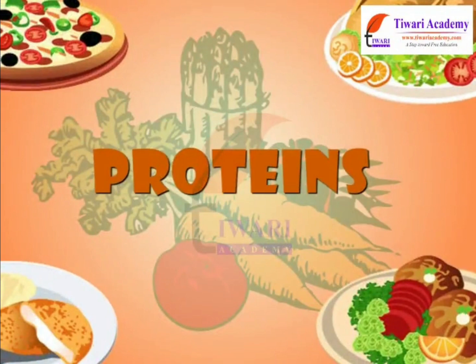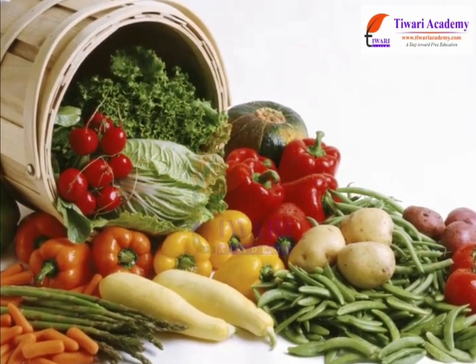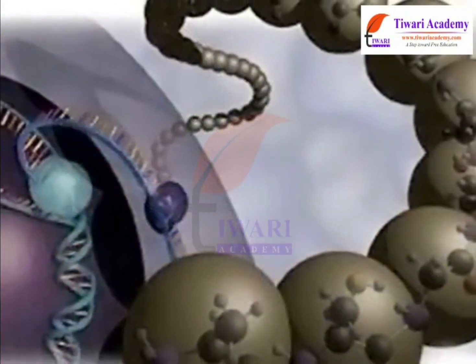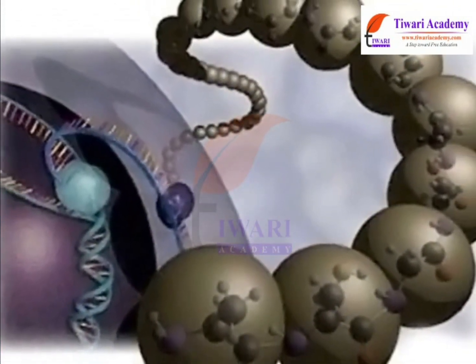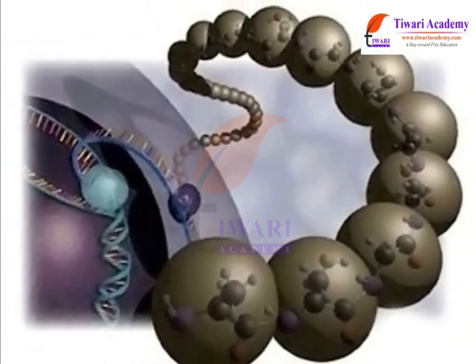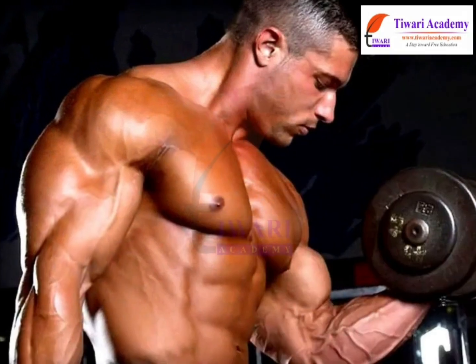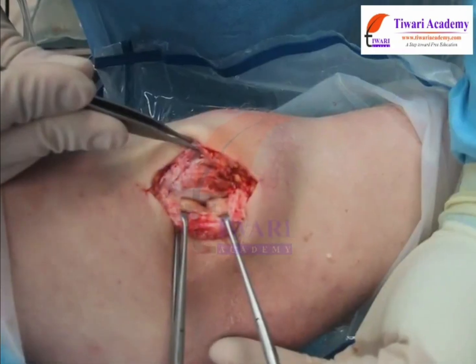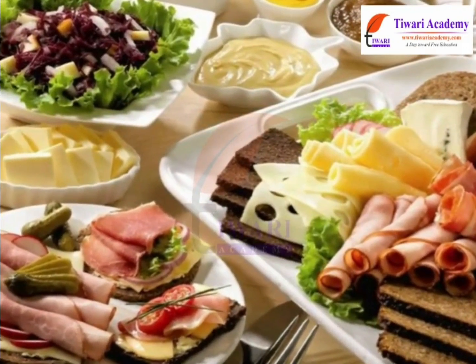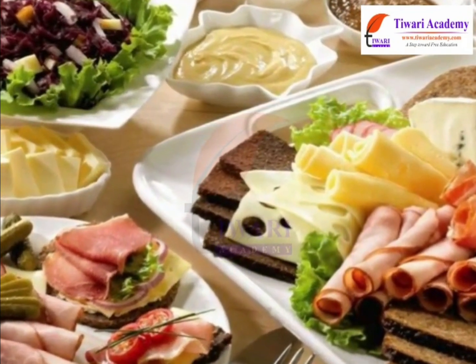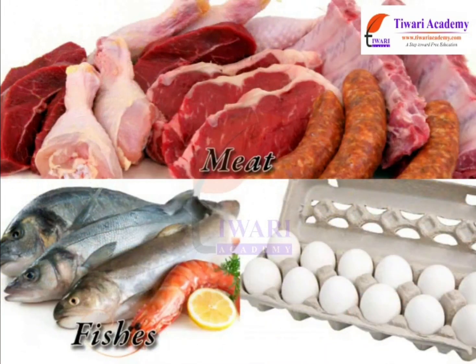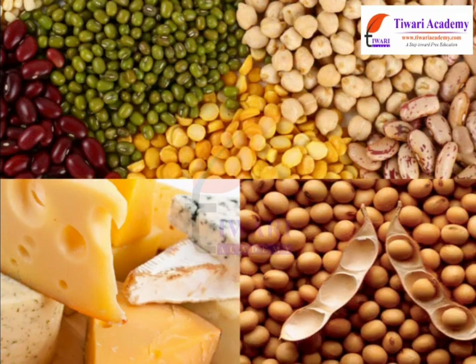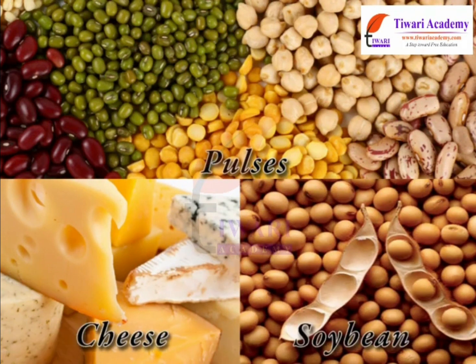Let us study about proteins. Proteins are large biological molecules consisting of one or more chains of amino acids. Proteins are essential for bodybuilding, growth and repair of damaged tissues. Foods containing proteins are often called bodybuilding foods. Meat, fish, eggs, pulses, cheese and soybean are some important sources of proteins.